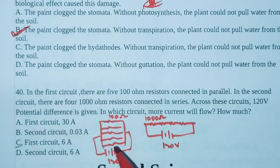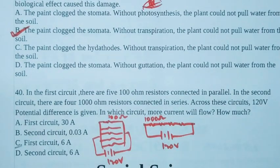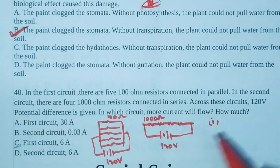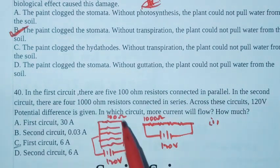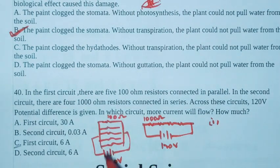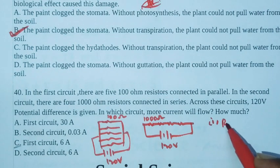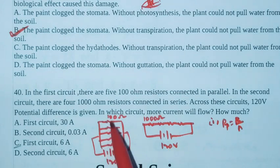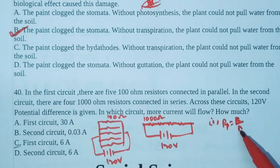Four 1000 ohm resistors connected in series. Across these circuits, 120 volt potential difference is given. First circuit has 120 volt, second circuit also has 120 volt potential difference. In which circuit will more current flow, how much?